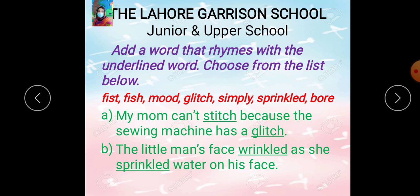Part B: The little man's face wrinkled as she sprinkled water on his face. Chotay aadmi ke face per wrinkle — lines namudar ho jana gucse ki wajah se — that is called wrinkle. Sprinkle means a small quantity of something scattered over a surface — chhinta lagana. Here the underlined word is 'wrinkled' and its rhyming word is 'sprinkled.'